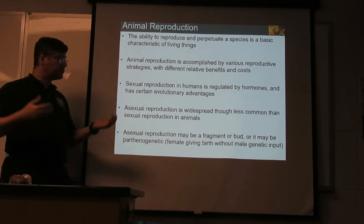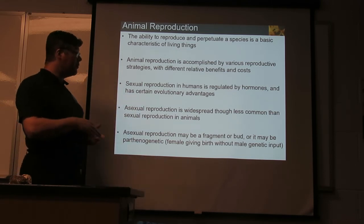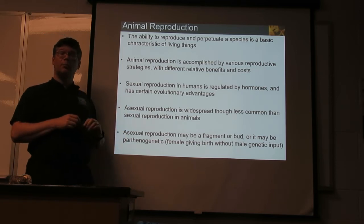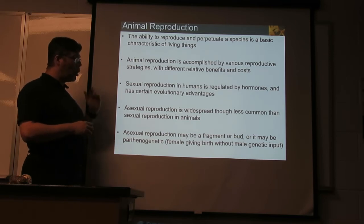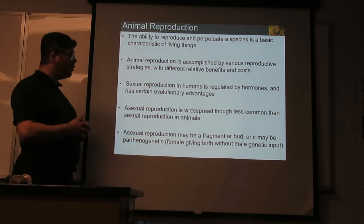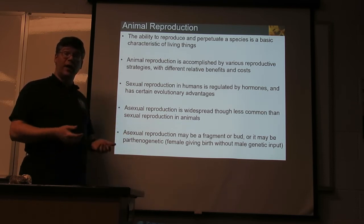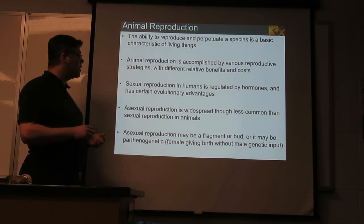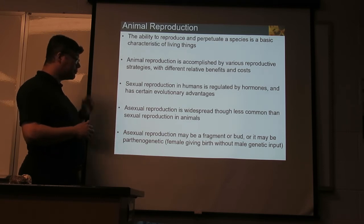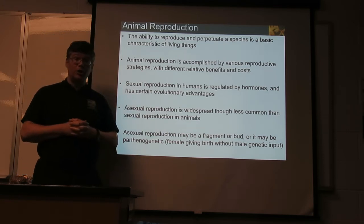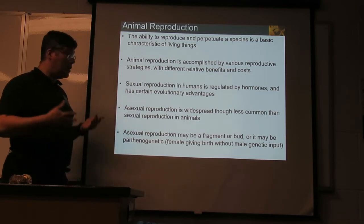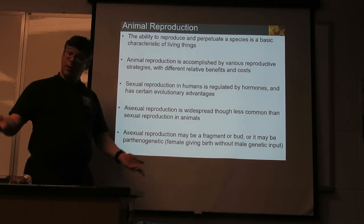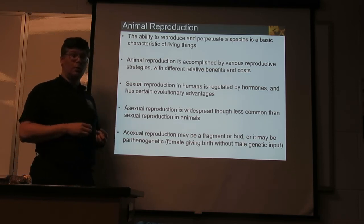Sexual reproduction has certain advantages and disadvantages. Asexual reproduction occurs also quite widely in animals, though not quite as prevalent as sexual. There are relatively few animal groups that are exclusively asexually reproducing, and quite a few that are exclusively sexually reproducing. Asexual reproduction happens in a few different ways.